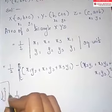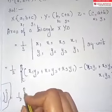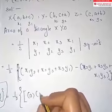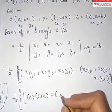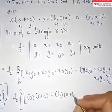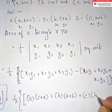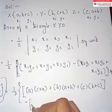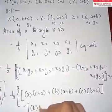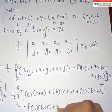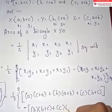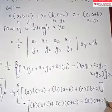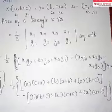Now three values substitute. x1, y1, x2, y2, x3, y3. So now substitute values. Half into, close the brackets. x1 value a, y2 value c plus a, plus x2 value b, y3 value a plus b, plus x3 value c, y1 value b. Minus, x2 value b, y1 value b, plus x3 value c, y2 value c plus a, plus x1 value a, y3 value a plus b. So bracket complete.